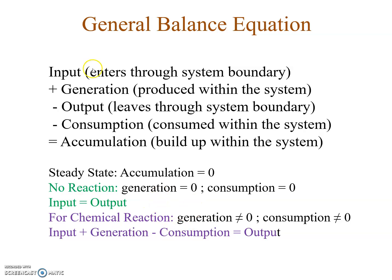Now, with chemical reaction, when you write any component balance, there is a possibility that some component may get produced or consumed. So now the generation and consumption terms are not zero and they appear in the balance equation. The balance equation now takes the form: input plus generation minus consumption equals output.